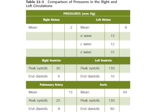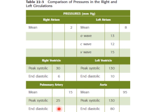Comparing pressures in the right and left heart: right atrial mean pressure is 2 mmHg, whereas left atrial mean pressure is 8 mmHg. In pulmonary (right-sided) circulation, the mean arterial pressure is 15 mmHg and systolic pressure is 25/8 mmHg. In systemic circulation, the mean pressure is 95 mmHg, systolic pressure is 130 mmHg, and diastolic pressure is 80 mmHg.